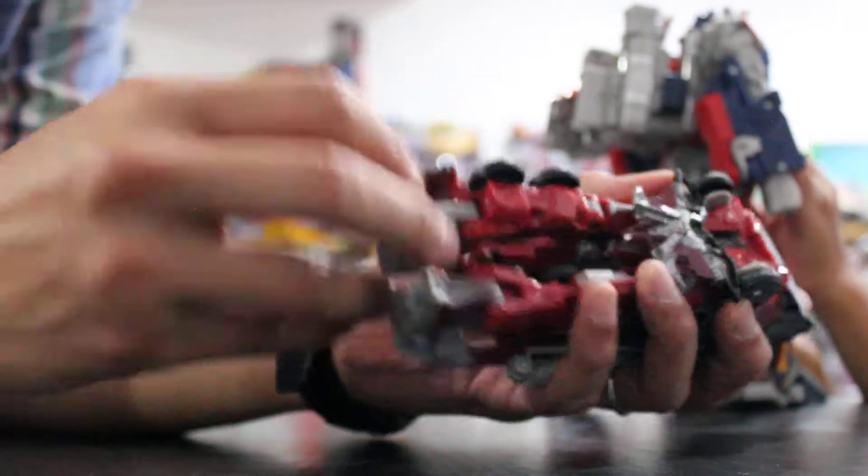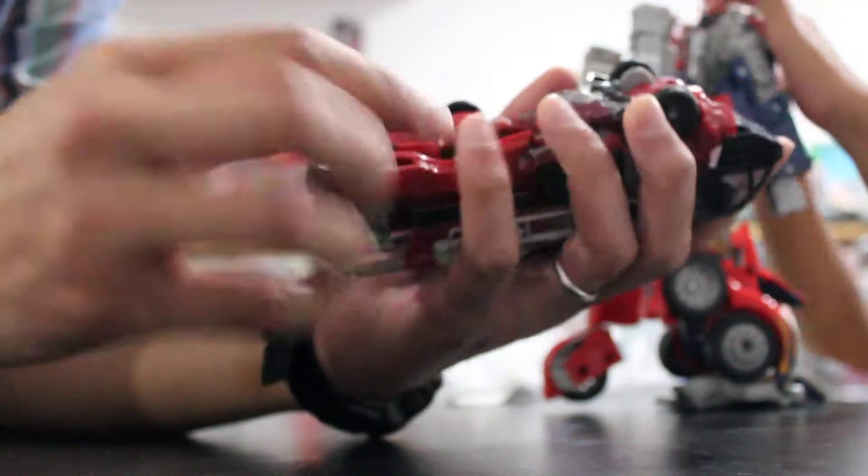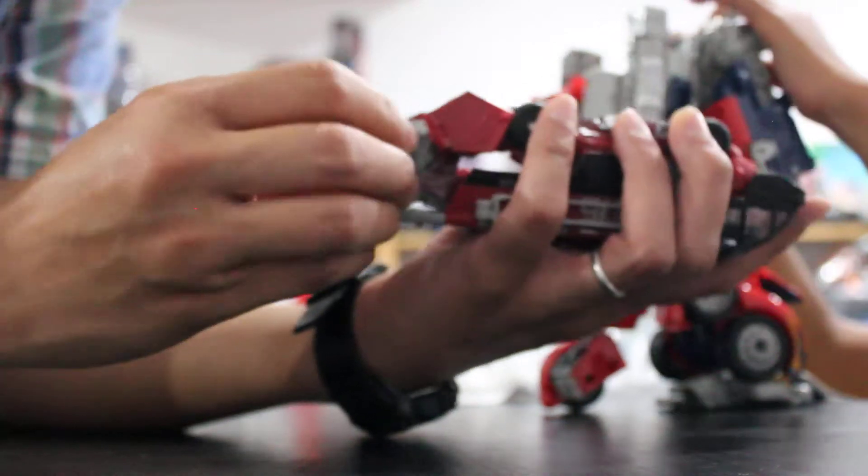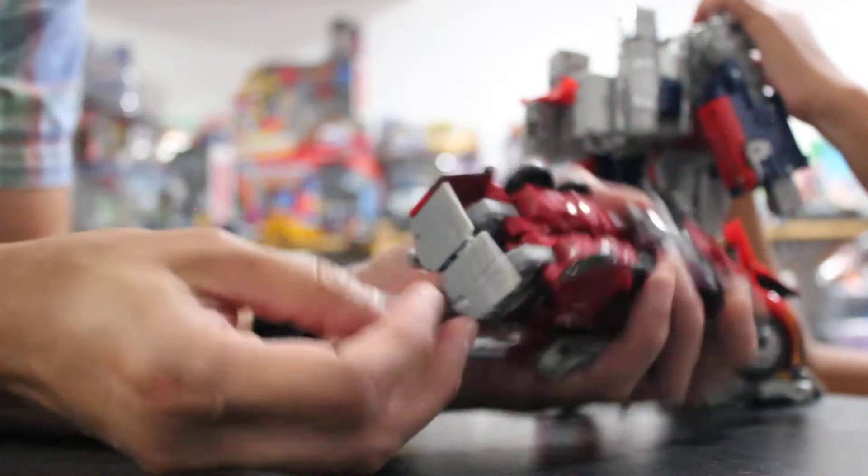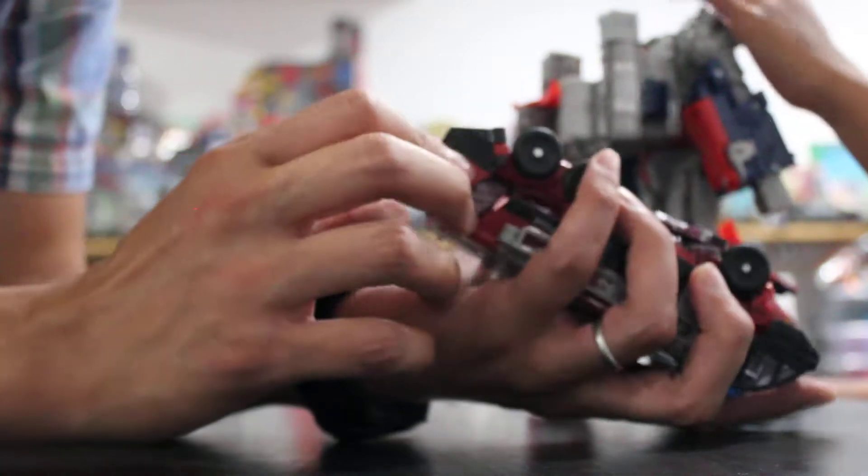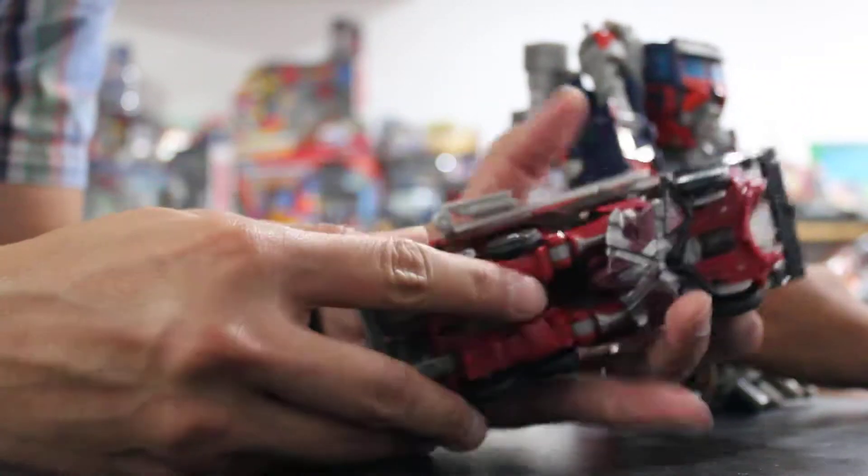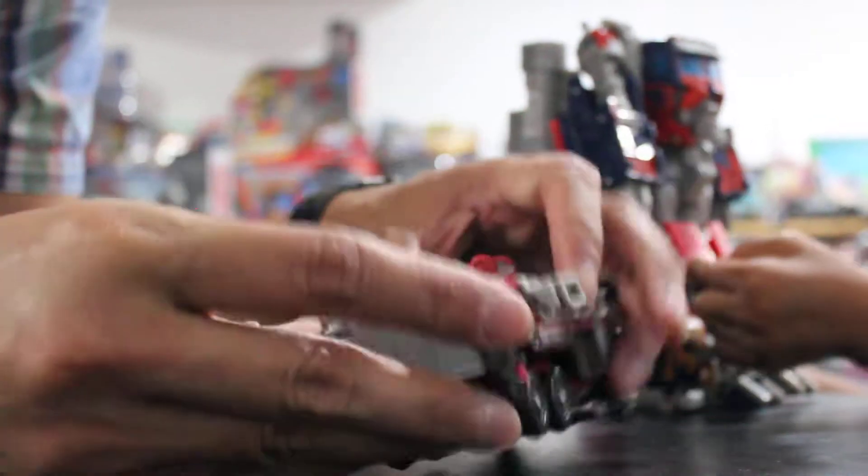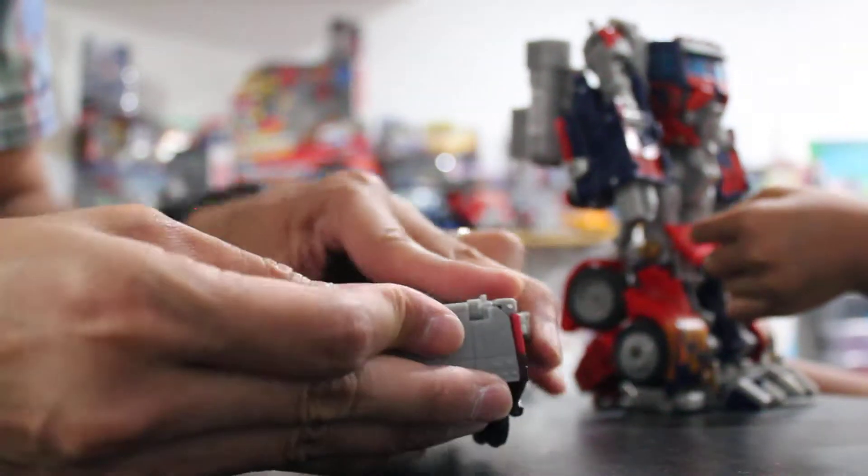This backwards, there you go. Spin this outward and that backward, connect the pegs or whatever those are called. There you go, almost done. That was pretty quick.